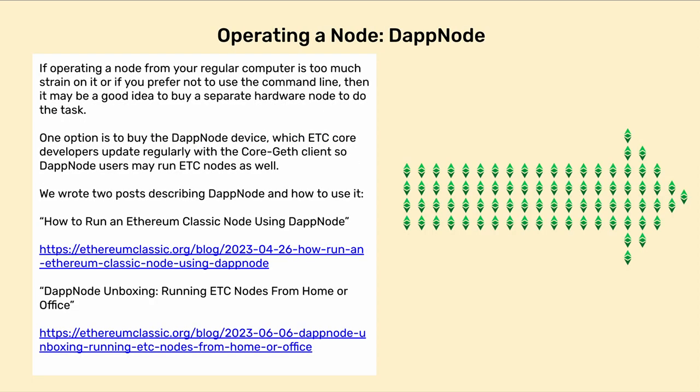Operating a Node — DAppNode. If operating a node from your regular computer is too much strain on it, or if you prefer not to use the command line, then it may be a good idea to buy a separate hardware node to do the task. One option is to buy the DAppNode device, which ETC core developers update regularly with a Core Geth client so DAppNode users may run ETC nodes as well. We wrote two posts describing DAppNode and how to use it: 'How to run an Ethereum Classic node using DAppNode' and 'DAppNode unboxing: running ETC nodes from home or office.'